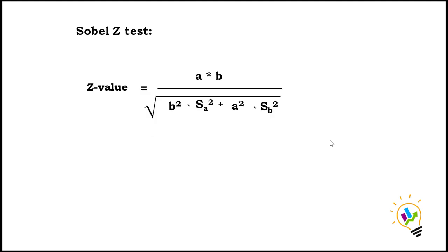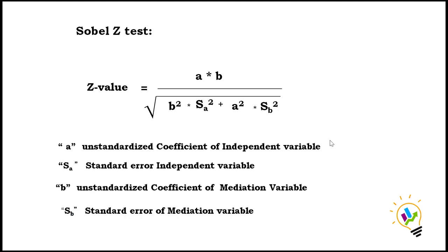Let us see the formula. This is the formula where we are going to find the z-value. In this, 'a' is the unstandardized coefficient of the independent variable, 'sa' is the standard error of the independent variable, 'b' is the unstandardized coefficient of the mediation variable, and 'sb' is the standard error of the mediation variable.